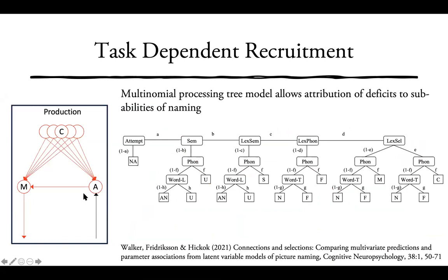For production, we used a naming task. Because naming is a multi-step process, it's often difficult to identify the sub-components involved. To address this, we developed a multinomial processing tree to estimate abilities associated with these sub-components. We look at the distribution of errors across the naming test, fit it to this model to identify latent variable sources of different error patterns, then map the estimated parameters onto lesion locations.